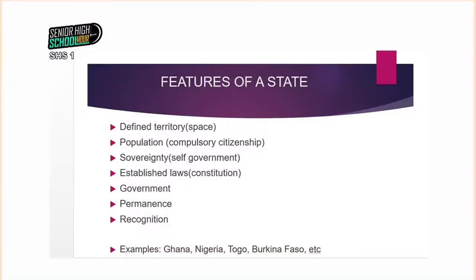We can classify Ghana as a state knowing that it has a well-defined territory. Remember that a society does not demand compulsory membership, but when we talk about a state, a state has its population known as citizens — whether you like it or not, once you are born here or you qualify to become a citizen, you compulsorily become one. Citizenship means membership of a particular country. In Ghana, compulsorily, once you are born to either a Ghanaian parent or grandparent, you are compulsorily a Ghanaian.